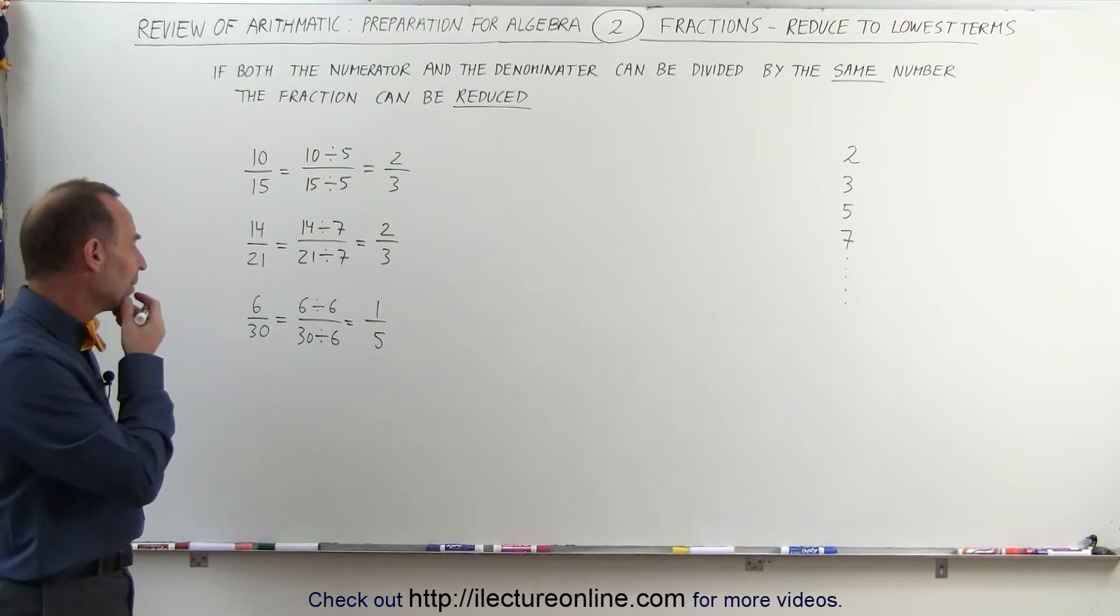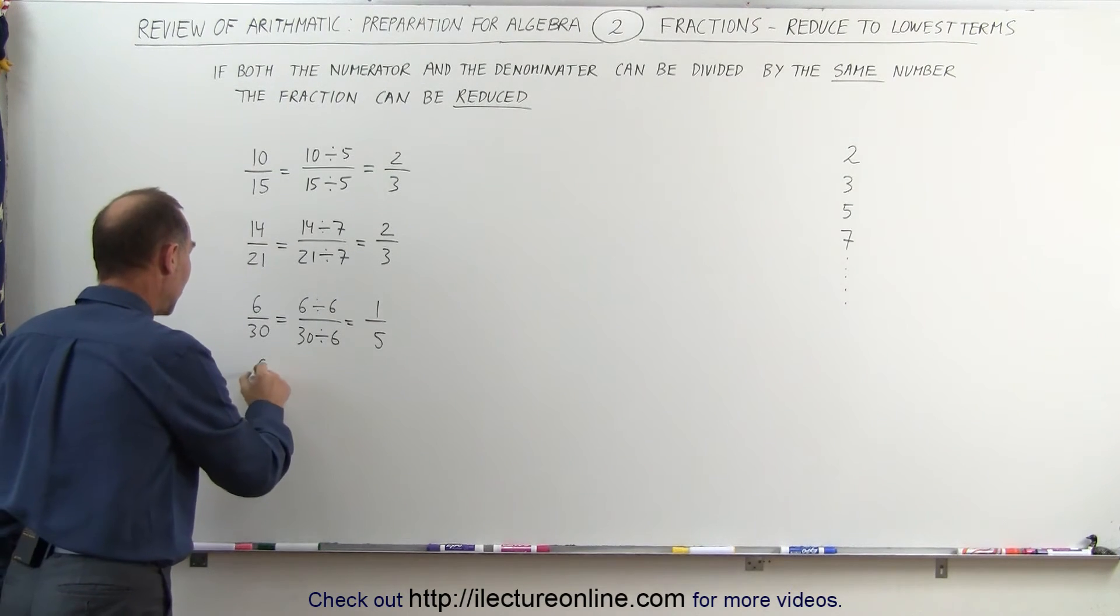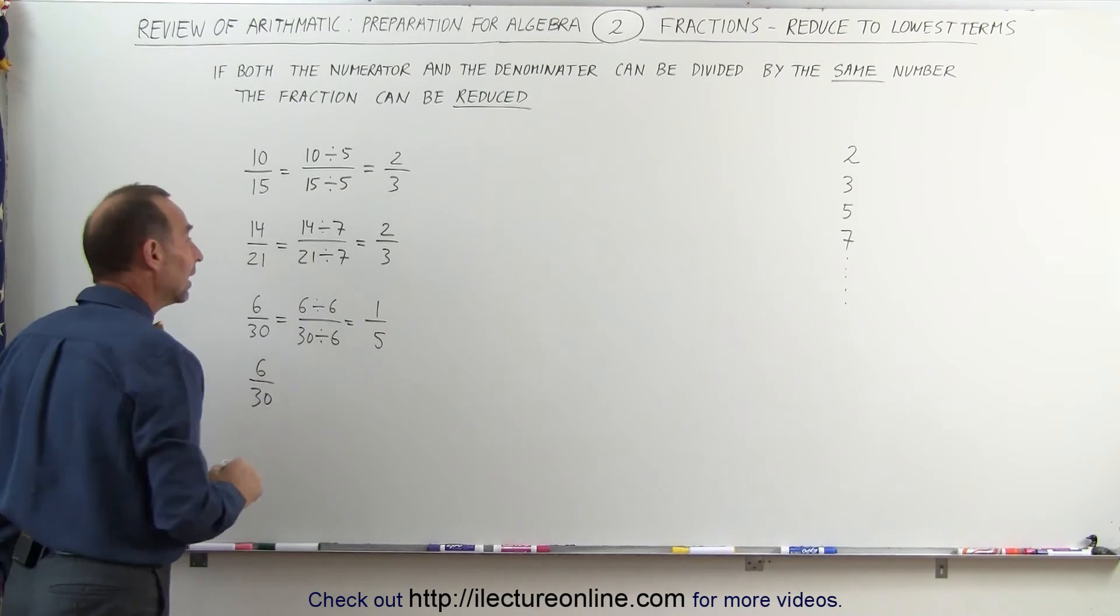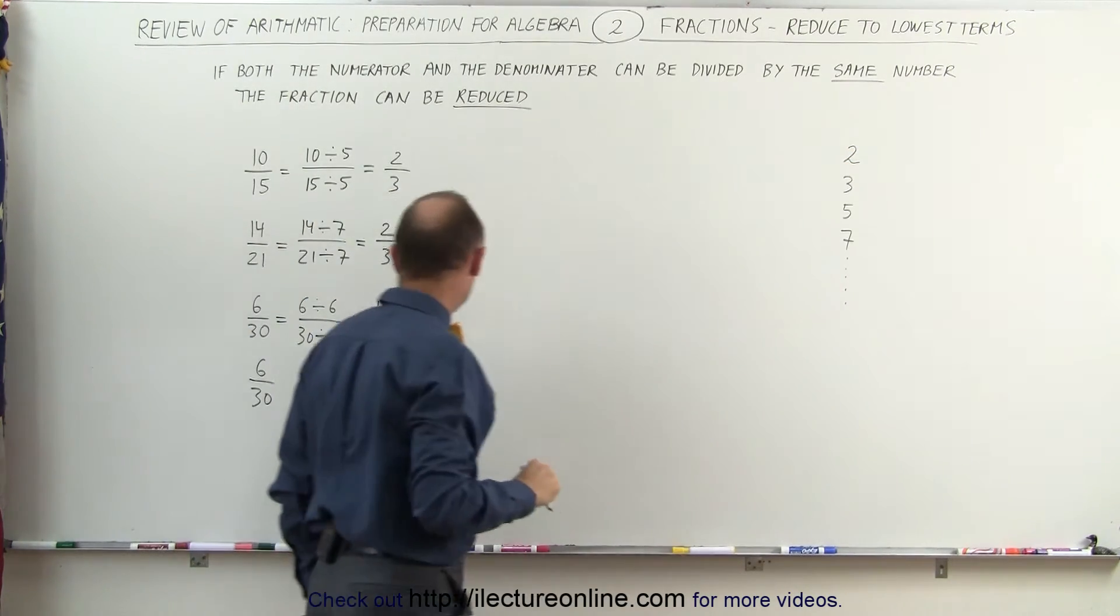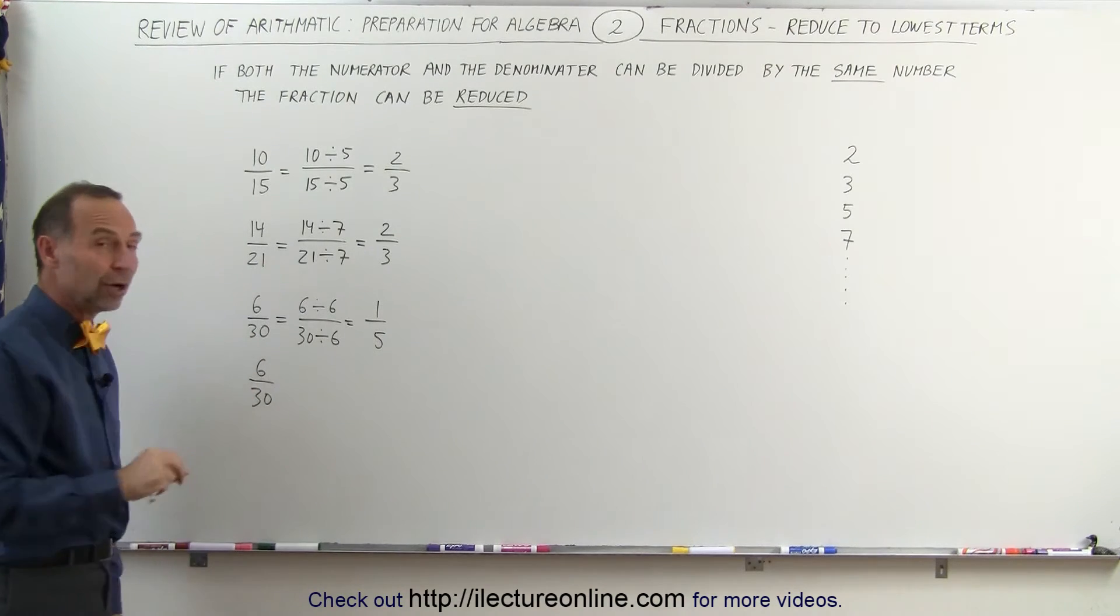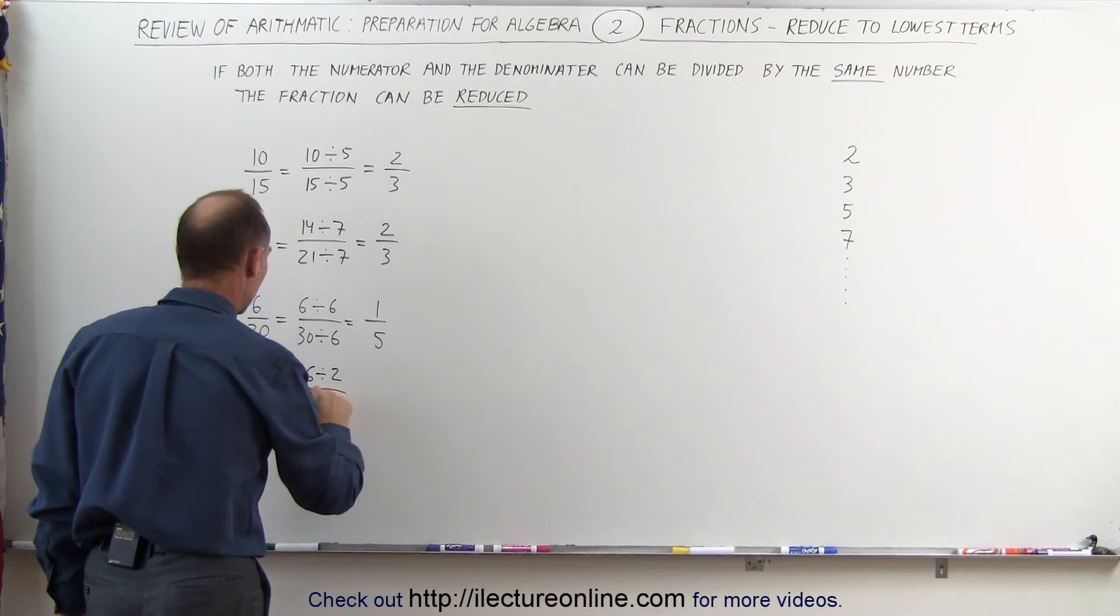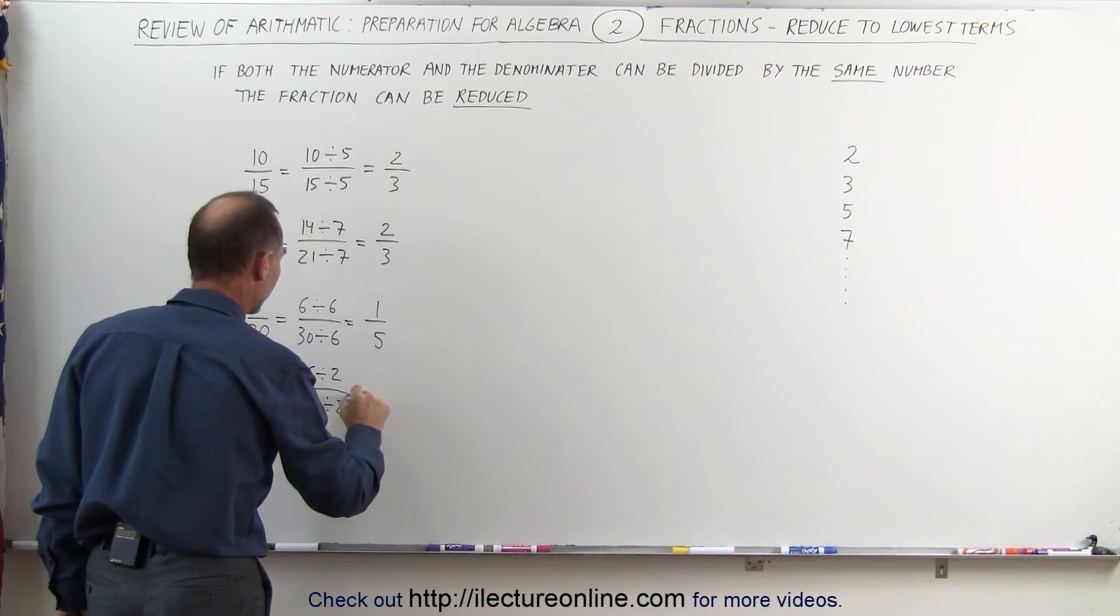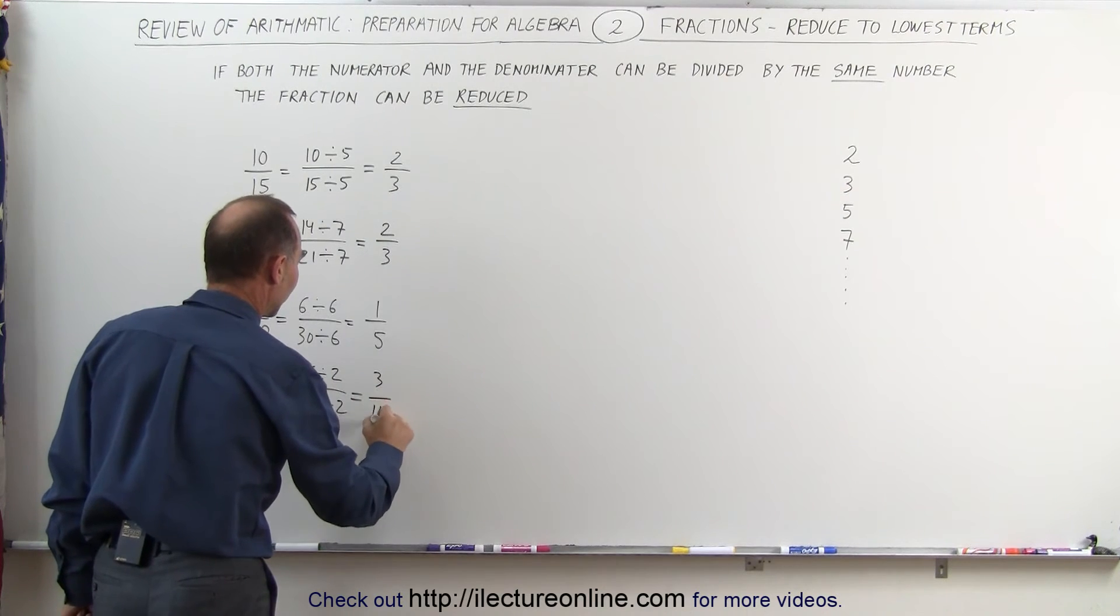Sometimes you may not see that. Sometimes you may say, well, I don't quite see that right away. That's okay. What you can do instead is start easy. Start with the number 2. Take the easiest number. Notice that both 6 and 30 are divisible by 2, which means you could write this as 6 divided by 2, and 30 divided by 2. 6 divided by 2 is 3. 30 divided by 2 is 15.